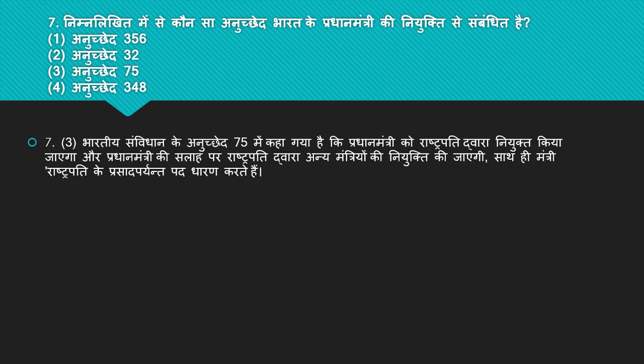Question hai: nimlikhit mein se kaunsa anuched Bharat ke Pradhan Mantri ki niyukti se sambandha rakhta hai? 4 options hain: Anuched 356, Anuched 32, Anuched 75, Anuched 348. Yeh kaafi zyada important question hai. Iska right answer hai number 3 — Anuched 75. Bharatiy Samvidhan ke Anuched 75 mein kaha gaya hai ki Pradhan Mantri ko Rashtrapati dwara niyukt kiya jayega, aur Pradhan Mantri ki salah par Rashtrapati dwara anye Mantriyon ki niyukti ki jayegi. Mantri Rashtrapati ke prasaad paryant pad dharan karte hain.